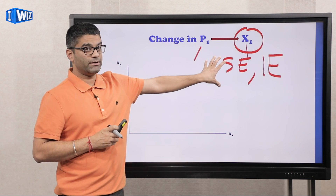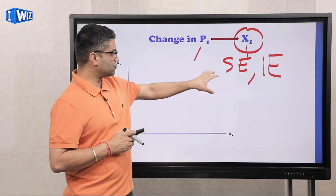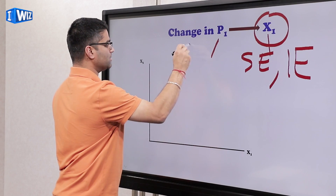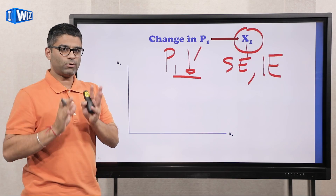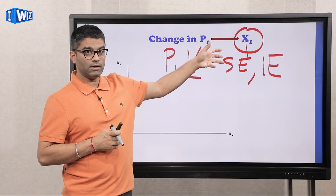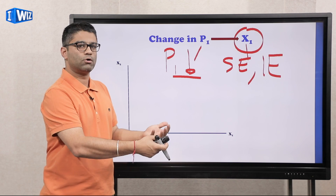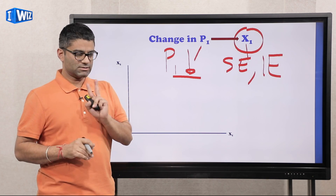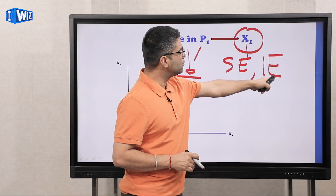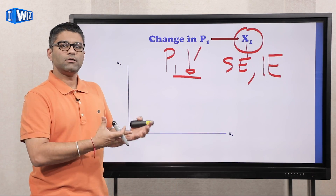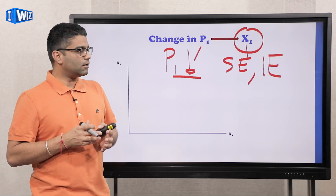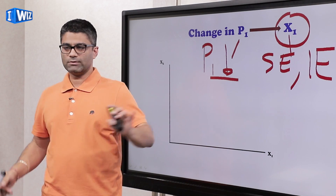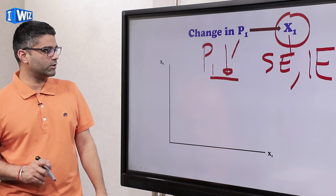I'll briefly recap, but if you don't understand, make sure you go watch that video. The substitution effect says if the price of good one goes down, good one in relation to another good becomes cheaper, so you'll buy more of good one. The second thing that happens is, in terms of your purchasing power, if one good becomes cheaper, your income indirectly goes up because now you have more money to spend on other things. That's the substitution and income effect — make sure you're clear on that.